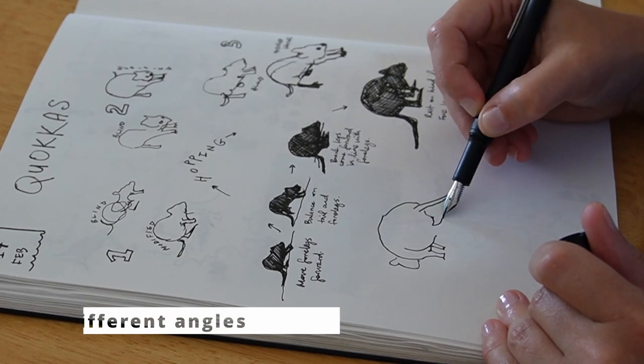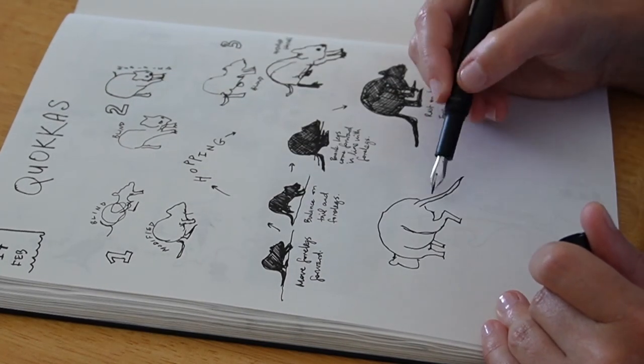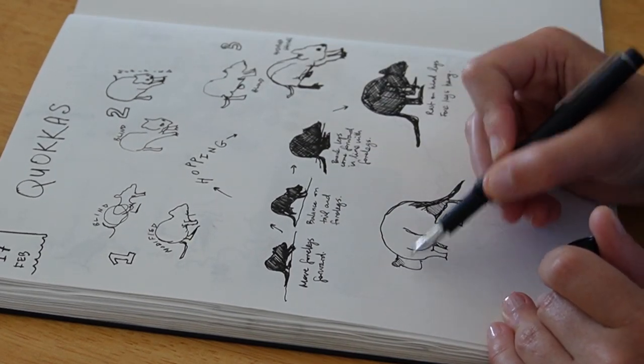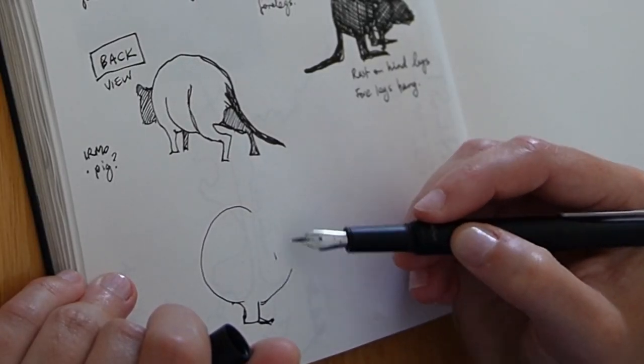After the movement study, I decided to draw the Quokkas from different angles, such as from behind and sitting up, as well as their adorable habit of holding their front paws clasped together.